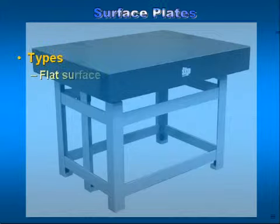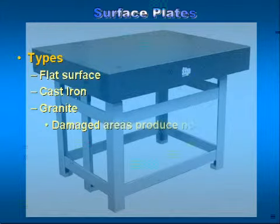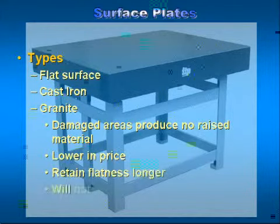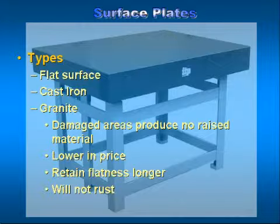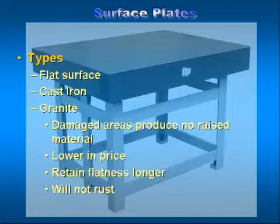There are different materials from which surface plates are made. Two of the main materials are cast iron and granite, which is a stone. Cast iron and granite surfaces have their good and bad points. For the purpose of this discussion, we will be talking about granite surfaces. The advantages of using granite surface plates include: damaged areas do not produce raised material, they are highly resistant to wear, they will not rust, they are resistant to damage from chemicals that may be present on parts being inspected, and they are resistant to any significant temperature expansion.